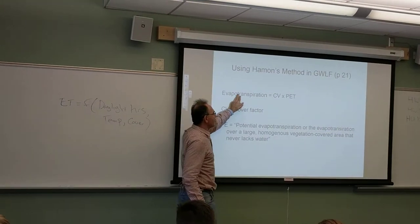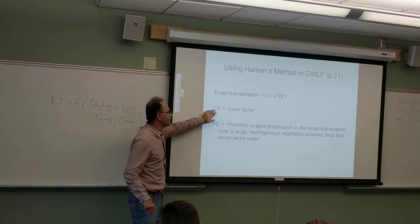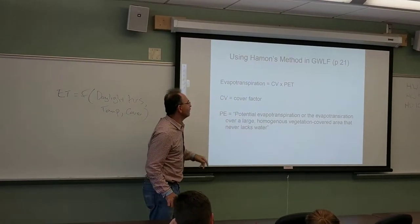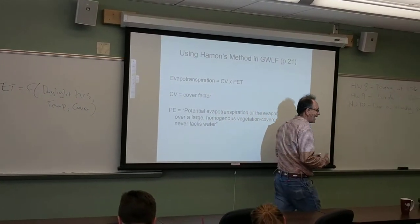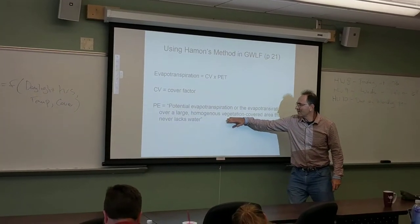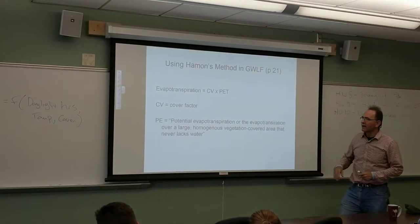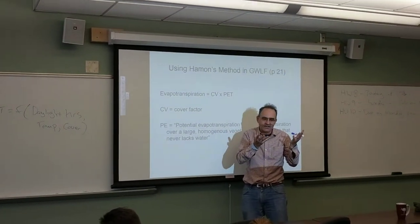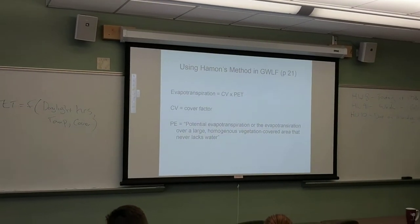Evapotranspiration is essentially the multiplication of a cover factor — which is almost linear from 0 to 1 — times your potential ET. The assumption is that it's over a large, homogenous, vegetation-covered area that never lacks water. As soon as you lack water, plants wilt and your ET goes down, because there's no more water to transpire.